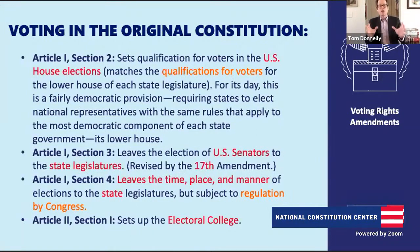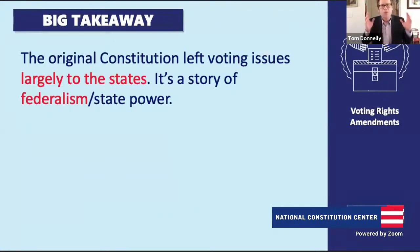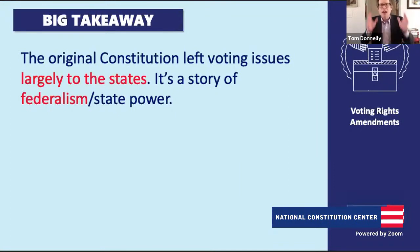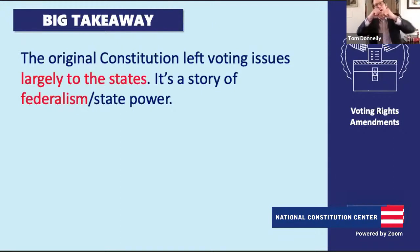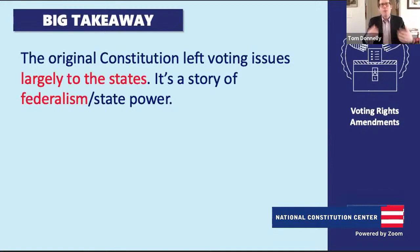So there's a lot in the original Constitution. The big takeaway is that the original Constitution leaves voting issues and election issues largely to the states. It's a story of federalism—a story of state power. Throughout American history, a lot of what we're debating is how much power is left to the states, how much goes to the national government, and how we strike the right balance within the Constitution's system of federalism.